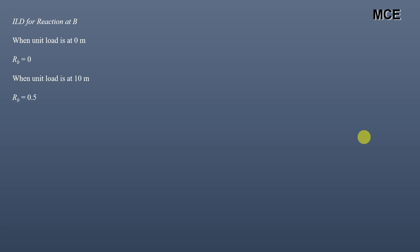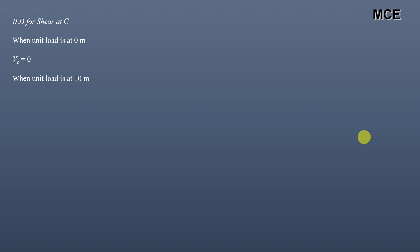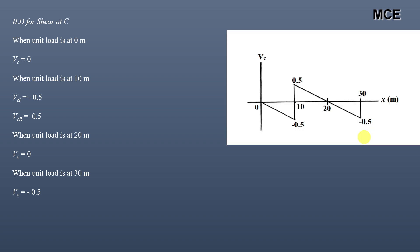ILD for reaction at B: at 0m RB=0, at 20m RB=1, at 30m RB=1.5. ILD for shear at C: at 0m shear=0, at 10m shear left=−0.5 and shear right=+0.5, at 20m shear=0, at 30m shear=−0.5. These are the influence line diagrams for RB and shear at C as the unit load is placed along the length of the beam.